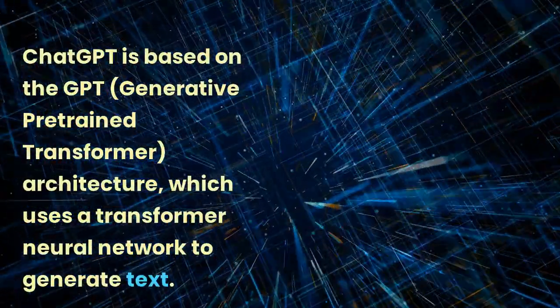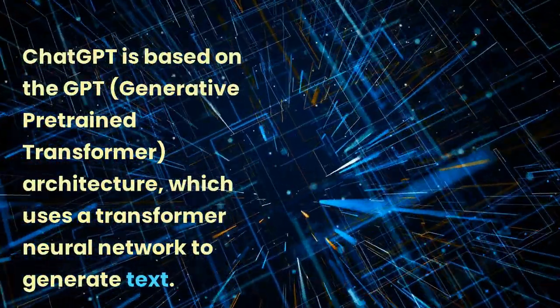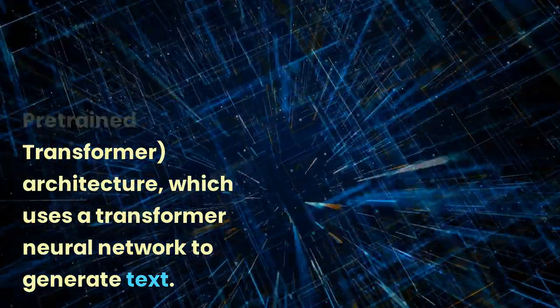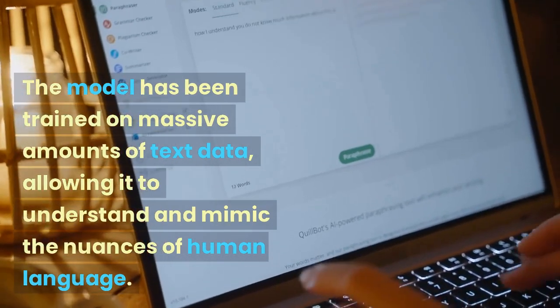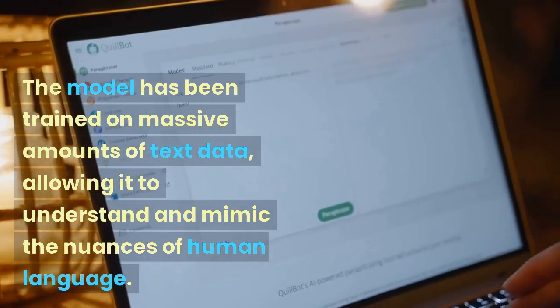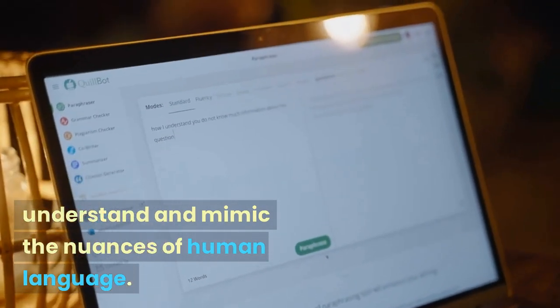ChatGPT is based on the GPT (Generative Pre-trained Transformer) architecture, which uses a transformer neural network to generate text. The model has been trained on massive amounts of text data, allowing it to understand and mimic the nuances of human language.